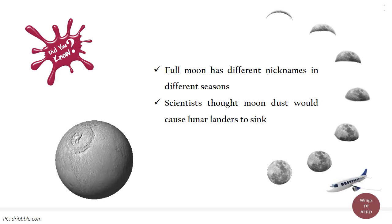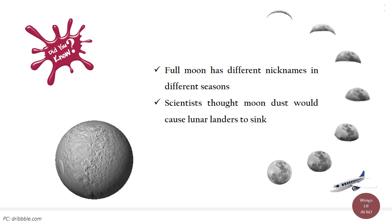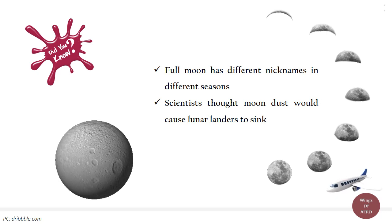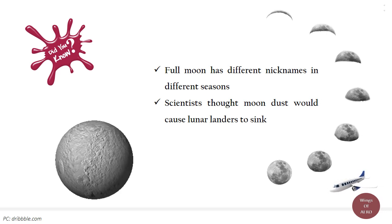A harvest moon, which is the full moon closest to the autumn equinox, is the best known example but there are many others including a wolf moon, strawberry moon and the sturgeon moon.